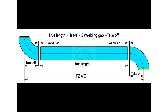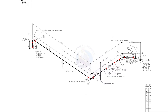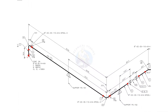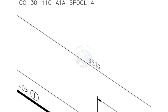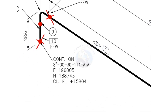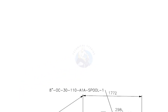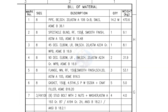Let us go to some examples. Here the travel length is 9536. Let us check the diameter of the pipe. The item number is 1. Going to the material list, item number 1 is a bevel end, schedule 20, seamless pipe. Let us check what the adjacent fittings are.